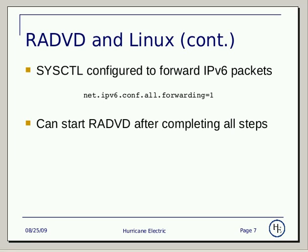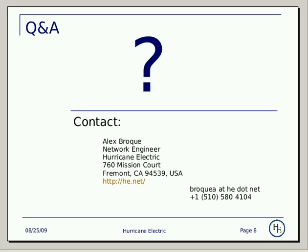Once you've configured the first usable address on your LAN-facing NIC, configured the router advertisement daemon's config file, and configured sysctl to allow IPv6 packet forwarding, you can now start the RADVD daemon, and hosts on the LAN should begin auto-configuring addresses out of that /64. If you have any questions, please feel free to contact us at ipv6@he.net. Thank you.